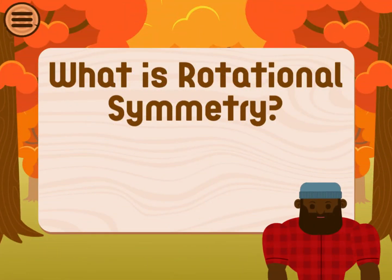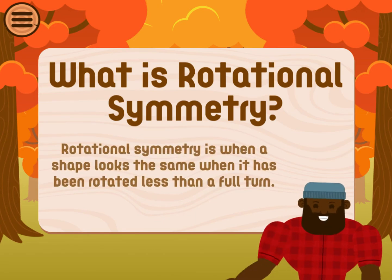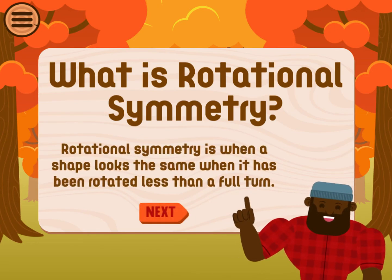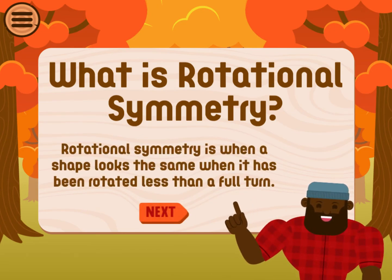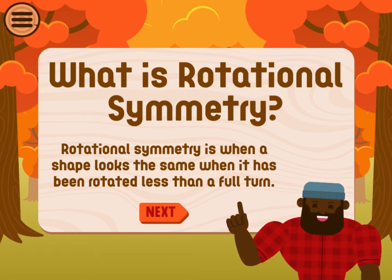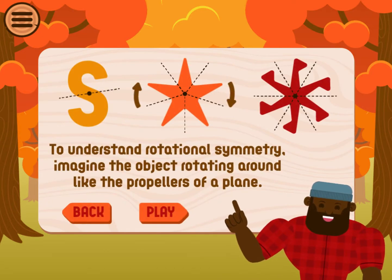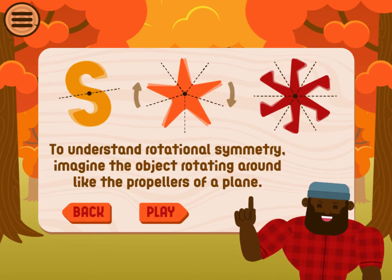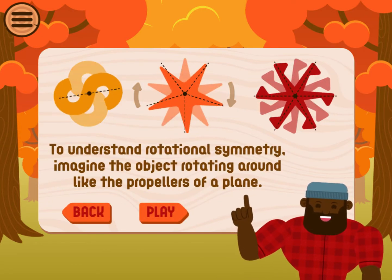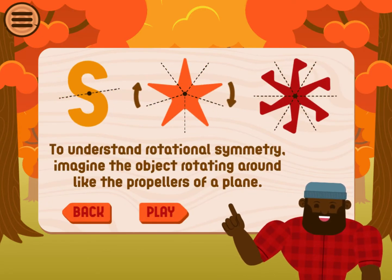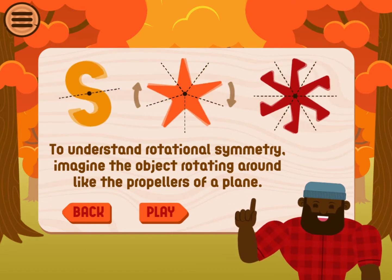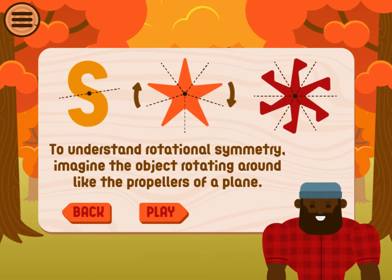What is rotational symmetry? Rotational symmetry is when a shape looks the same when it has been rotated less than a full turn. To understand rotational symmetry, imagine the object rotating around like the propellers of a plane.